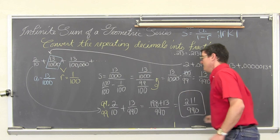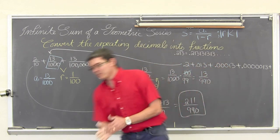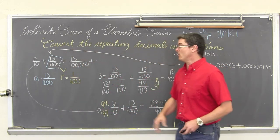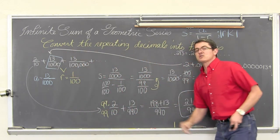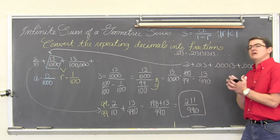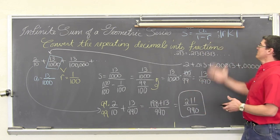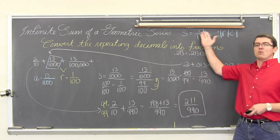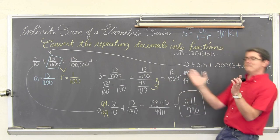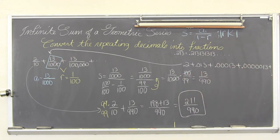And that is three examples of how to turn a repeating decimal into a fraction — and actually, unlike the younger grade where you learned this, you understand why. Because it is an infinite sum of a geometric series. I am Mr. Tarrou. BAM! Go do your homework.